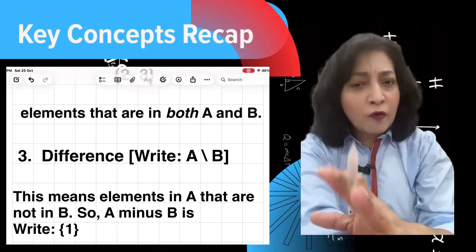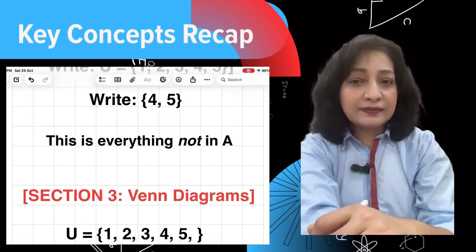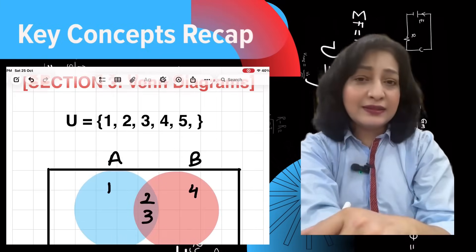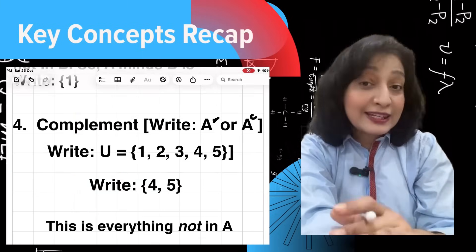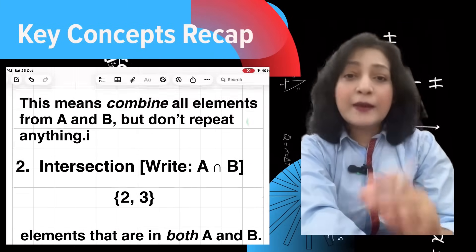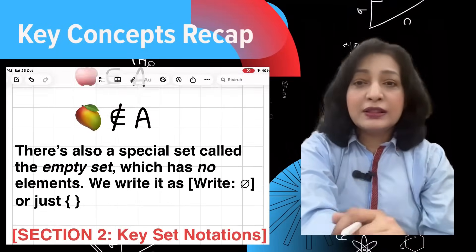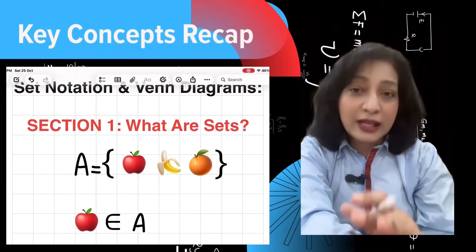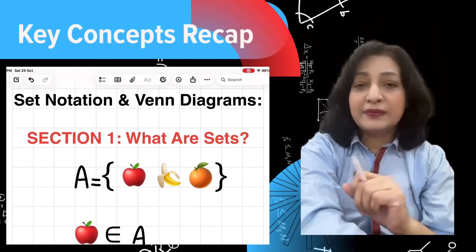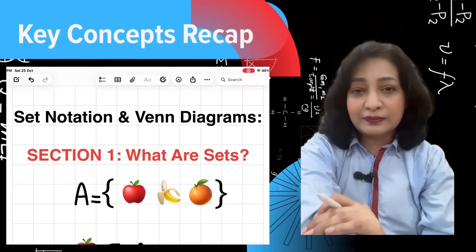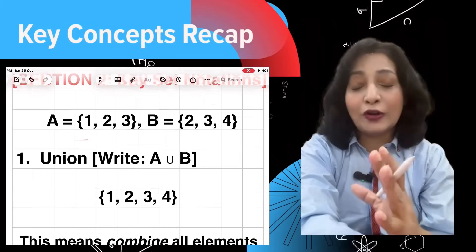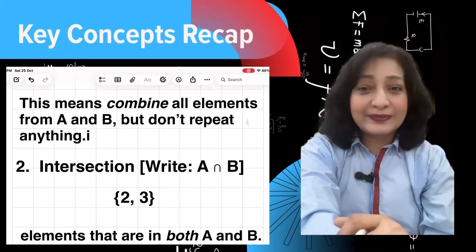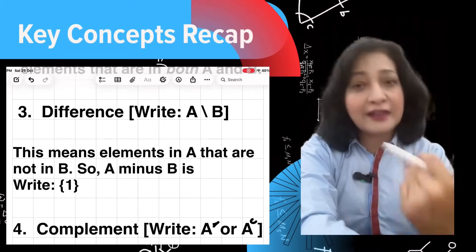For homework, try this. I am writing here: U = {1, 2, 3, 4, 5}, A = {1, 3, 5}, B = {2, 3, 4}. Find A union B, A intersection B, and draw a Venn diagram to show it on your copies. Any questions? Ask me.